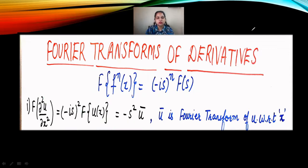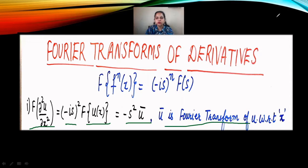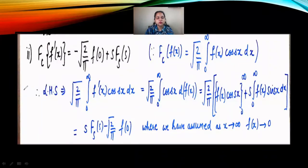This was the first property: the Fourier Transform of del square u by del x square is equal to minus iota s squared times F of ux, which equals minus s squared times u bar, where u bar is the Fourier Transform of u with respect to x. Moving to the next property, if we apply the Fourier Cosine Transform on the first order derivative of f of x, the result is minus root 2 by pi times f(0) plus s times the Fourier Sine Transform of the function.